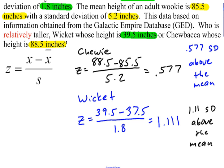So, Wicket is actually relatively taller than Chewbacca is, because when we compare Wicket to the other Ewoks that he lives with, his height is 1.11 standard deviations above the mean.